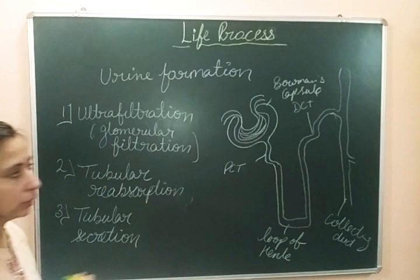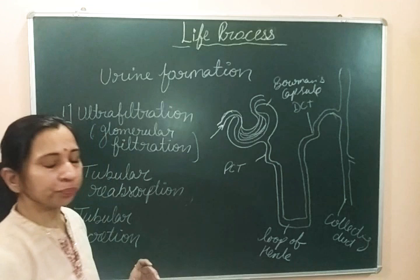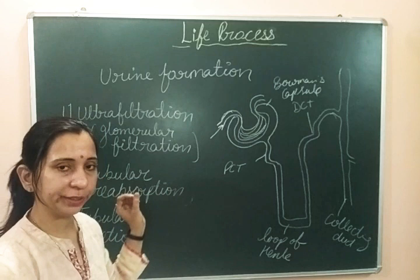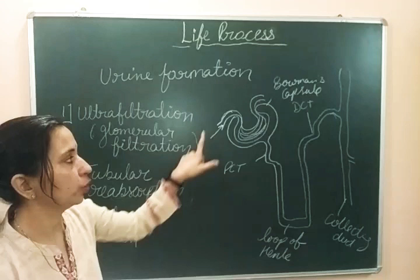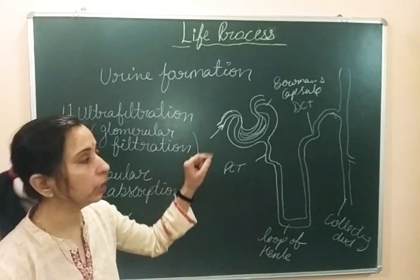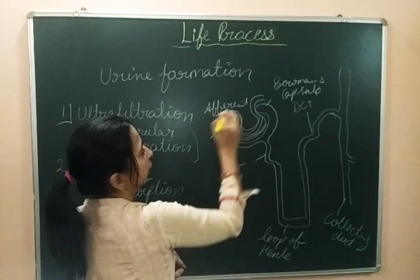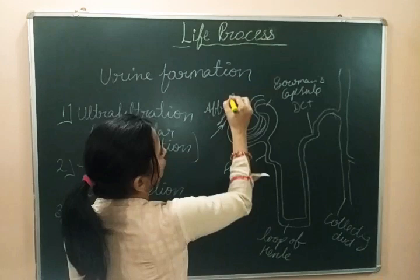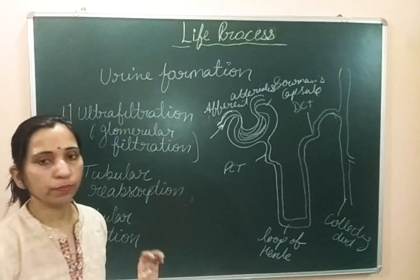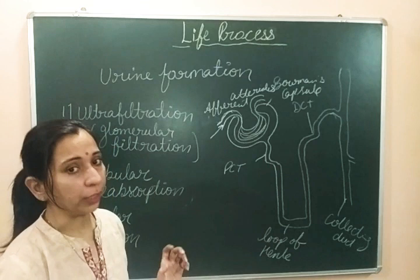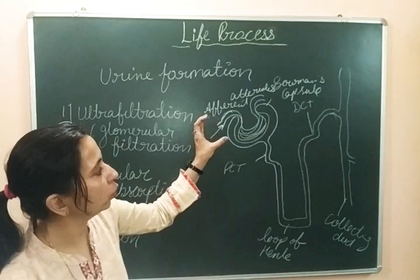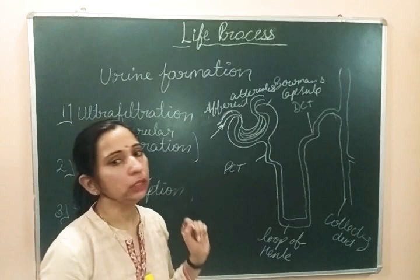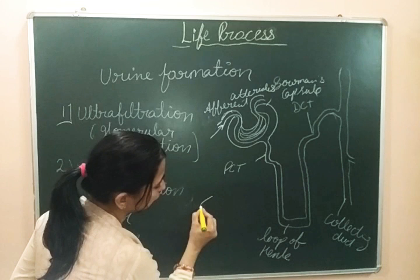Now let's talk about the process of urine formation — how urine is formed. When blood comes inside the kidney, it comes from the renal artery. The renal artery divides into the afferent arteriole. The afferent arteriole carries blood which will enter the glomerulus. When blood comes inside the nephrons by the afferent arteriole, the arteriole enters the glomerulus and divides into thin capillaries.